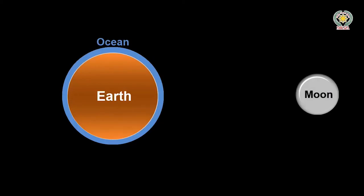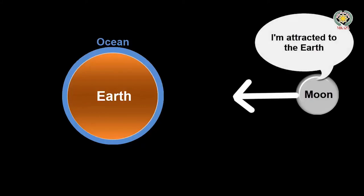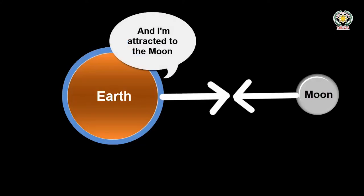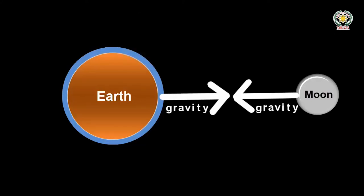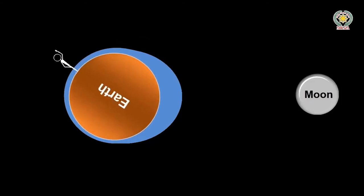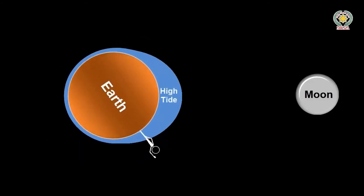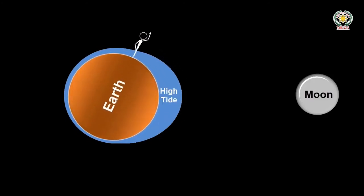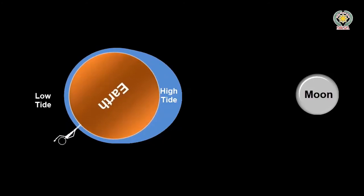We'll draw the Earth as a diagram with its surrounding layer of ocean, and to the right is the silvery moon. Everything is attracted to everything else in the universe with the force of gravity, so the moon is attracted to the Earth and the Earth is equally attracted to the moon. The moon pulls on the ocean closest to it and makes it bulge outwards. When the Earth rotates, sea level is higher at that point, causing a high tide, and a low tide where the oceans don't bulge.